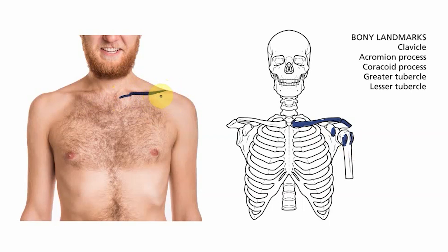If you follow the clavicle along laterally we should find a small bump just here and this will be our acromion process of the scapula. The coracoid process is just inferior to that lateral end of the clavicle, around here. You won't be able to see this on a patient but you should be able to palpate it. Finally the greater and lesser tubercles — they're hidden underneath muscles so we won't be able to see them, but you should be able to palpate them about here and here.